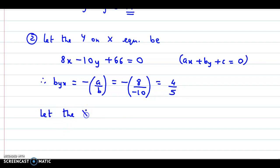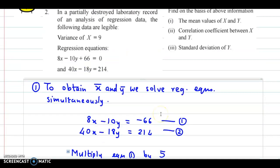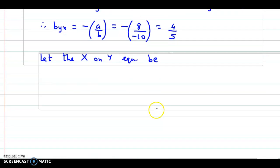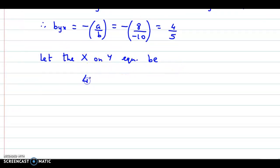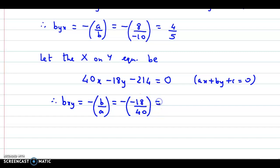Let the X on Y equation be the second equation, 40x minus 18y minus 214 equals 0. From this we get bxy which is minus B by A, so that is minus of minus 18 by 40, which reduces to 9 by 20. Now we need to check if our assumption is right or wrong.